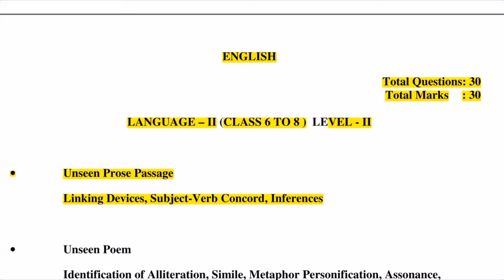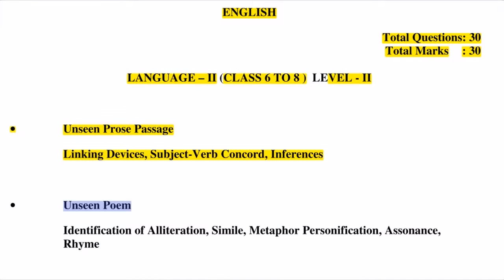Next is the Unseen Poem, which includes identification of Alliteration (Anupraise), Simile, Metaphor (Roopak and Roopma), Personification (Marni Karan), Assonance, and Rhyme.